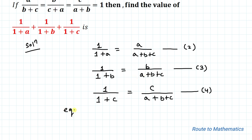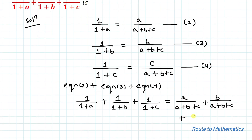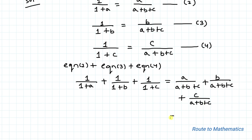In the next step, let's add equation 2 plus equation 3 plus equation 4. So we have 1/(1+a) plus 1/(1+b) plus 1/(1+c) equals a/(a+b+c) plus b/(a+b+c) plus c/(a+b+c). Since all denominators are the same, we can write (a+b+c) divided by (a+b+c). The numerator and denominator are the same, so they cancel out, giving us 1 as our answer.